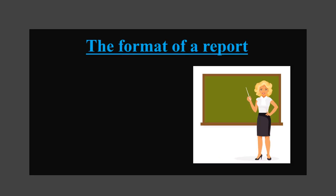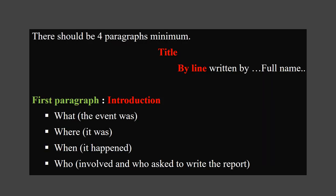Now you're going to learn the format of the report. There should be a minimum of 4 paragraphs. The title should be at the center. Keep the byline towards the top right-hand corner. There you have to write your full name to make it formal. The first paragraph is the introduction. You have to address: what the event was, where it was, when it happened, who was involved, and who asked you to write the report.